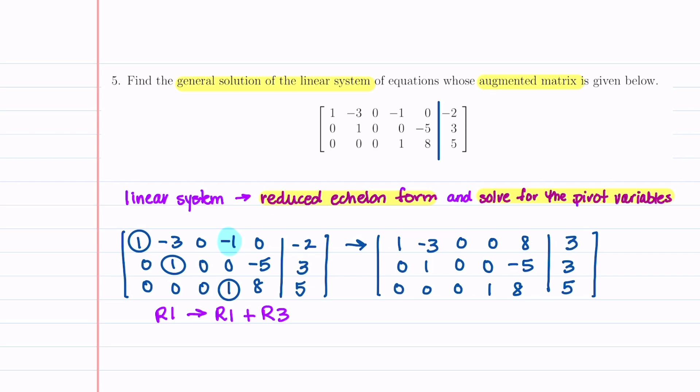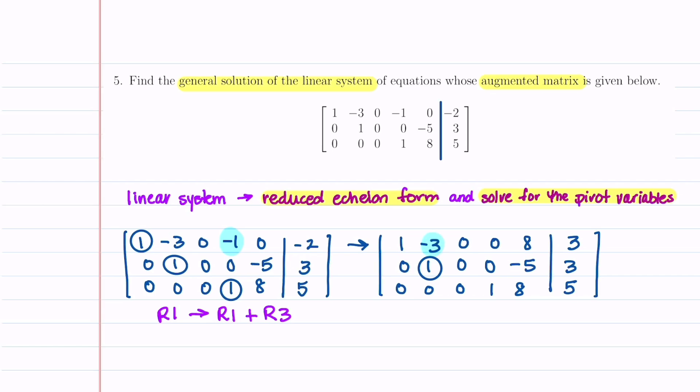Now let's circle our next pivot. Again, we're going to work up and to the left. So that's the pivot that we're going to circle. And we're going to get a zero above that pivot. The row operation that we're going to use is we're going to take row one and we're going to replace it with row one plus three times row two.